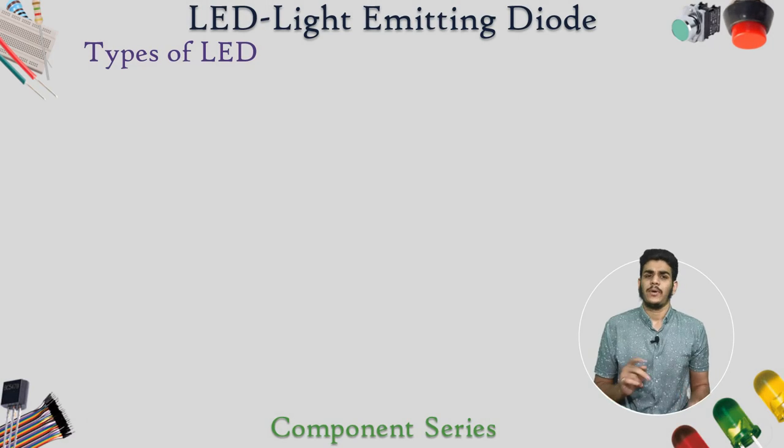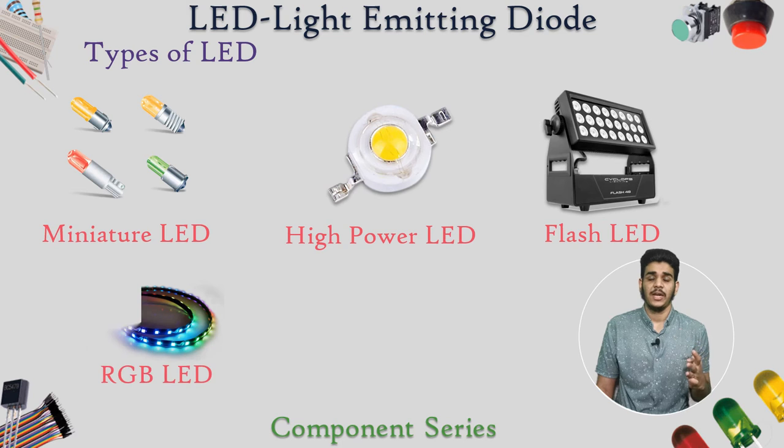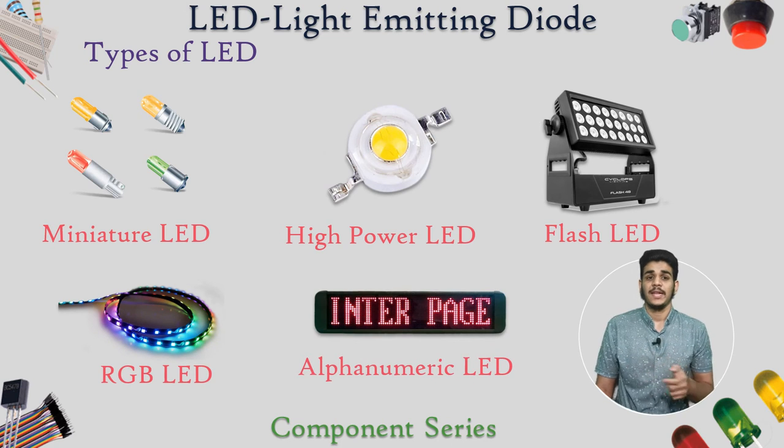Now what types of LEDs are available nowadays in the market? First is Miniature LED, High Power LED, Flash LED, RGB LED and Alphanumeric LED.